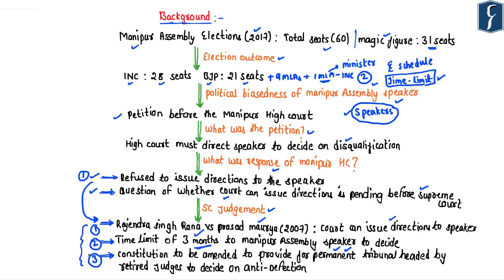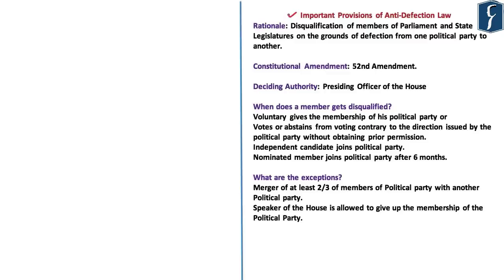This verdict is considered landmark for three reasons: first, the Supreme Court confirmed courts can issue directions to the Speaker; second, it imposed a three-month time limit on Speakers to decide on disqualification; and third, it suggested Parliament amend the Constitution, take away the Speaker's powers on anti-defection, and transfer them to a permanent tribunal headed by retired judges. Having understood the background and recent judgment, let us examine the basic provisions of anti-defection law and various Supreme Court interpretations.